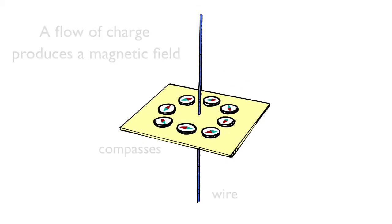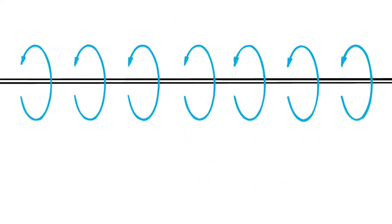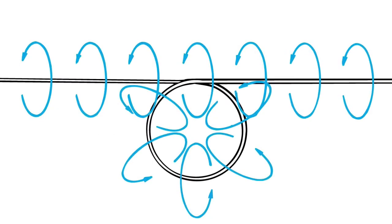These blue arrows represent the magnetic field surrounding a charge-carrying wire. Watch what happens when we loop the wire. Inside the loop, the magnetic fields become concentrated.